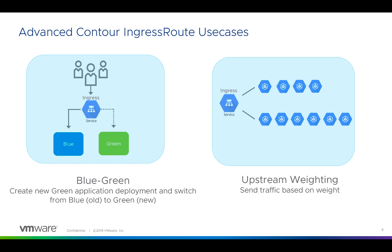The concept of delegation allows you to implement some advanced use cases. The first is Blue-Green update with near instant switchover. The second is upstream weighting, which enables you to define relative weights for multiple services. Think of upstream weighting as a way to do canary testing of a new version of an application — sending a small fraction of user traffic to experiment with the new service while routing the majority to the existing production service. Based on positive feedback, you can switch more and more users to the new service.